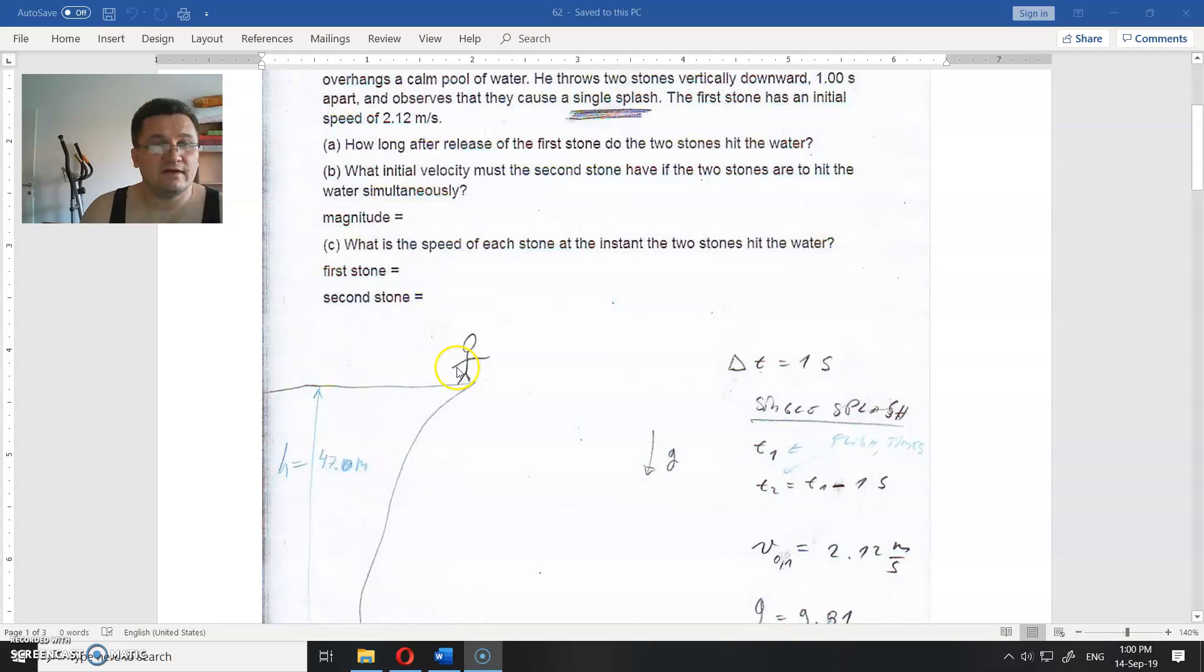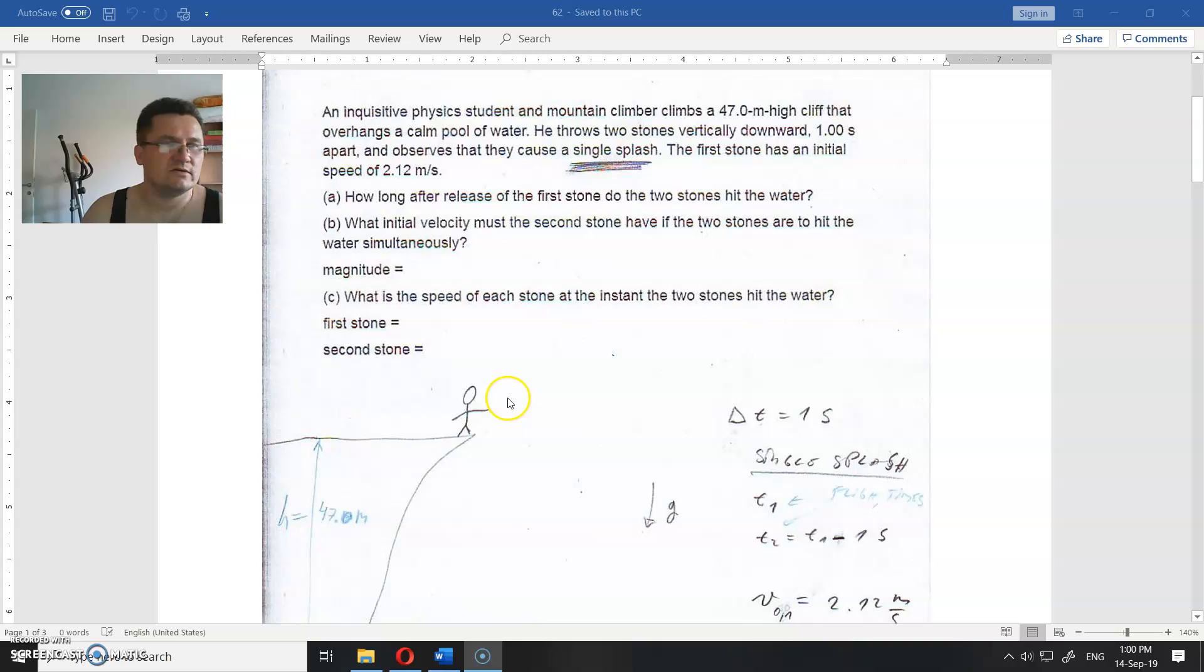I will not read all of this, but you have a physics theory on the cliff jump. The height of the cliff is 47 meters, there is some water below there, and he's throwing two stones.